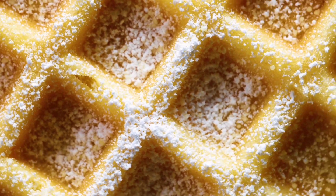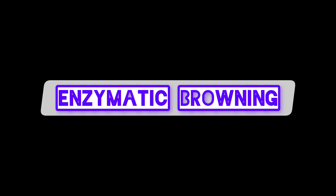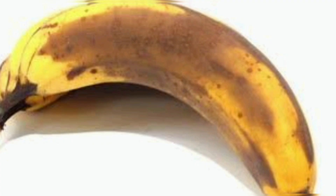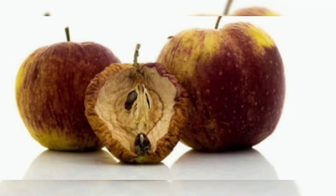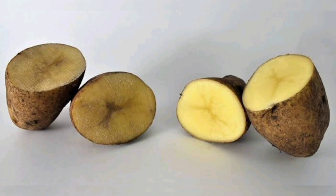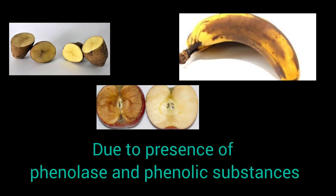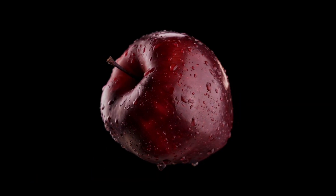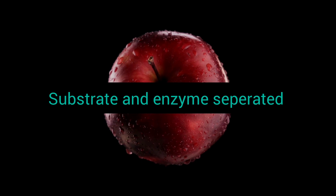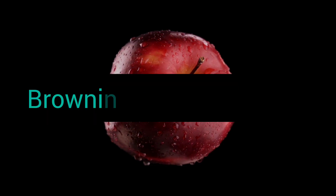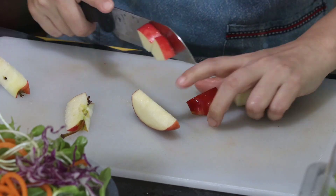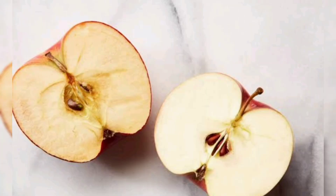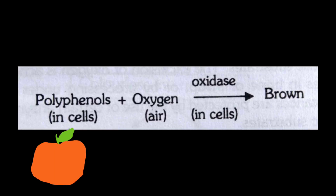First, let's discuss enzymatic browning. Many fruits and vegetables have a tendency to turn brown when damaged or when cut surfaces are exposed to air — for example, apple, banana, and potatoes. This is due to enzymatic reactions. The formation of brown color is due to the action of the enzyme phenolase on phenolic substances. Normally, the phenolic substrates are separated from phenolase in intact tissues and browning does not occur, but when food containing such substrates are cut and exposed to air, rapid browning of the cut surface takes place.